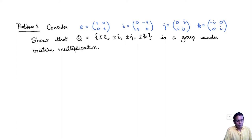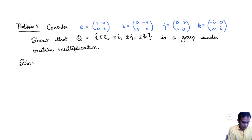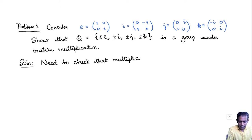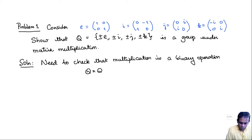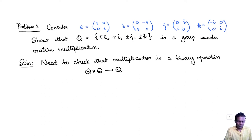What is it that we need to check to establish that Q is a group? Firstly, for a group we need to know that we have a binary operation. We need to check that multiplication of matrices is a binary operation from Q×Q to Q — that is, if you take any two matrices in Q and multiply them, you once again get a matrix in Q.